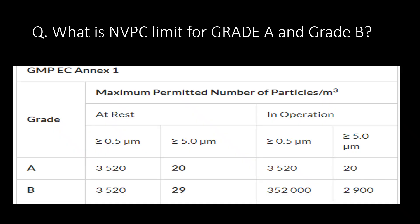A very important question: what is the NVPC limit for Grade A and Grade B, or what is the maximum permitted number of particles per cubic meter for Grade A and Grade B? You can refer to the table below as per GMP Annex 1 for Non-Viable Particle Count limits for Grade A and Grade B.